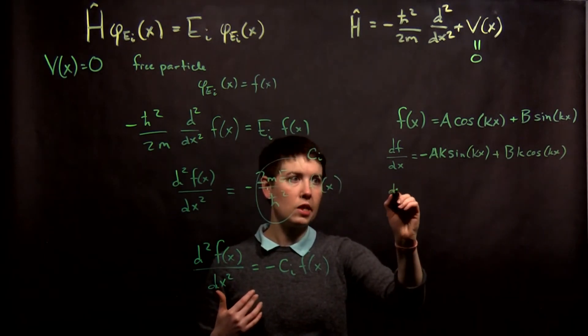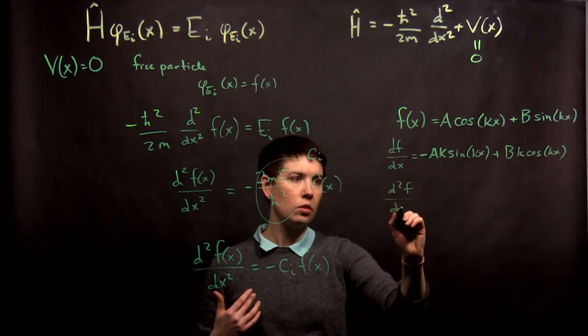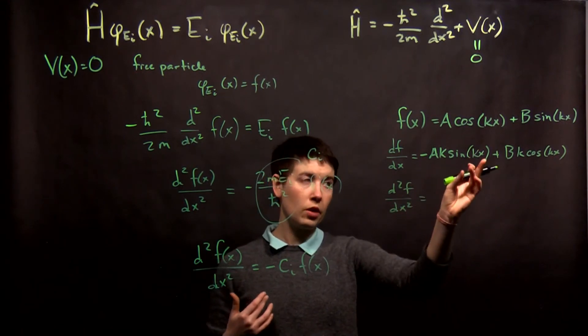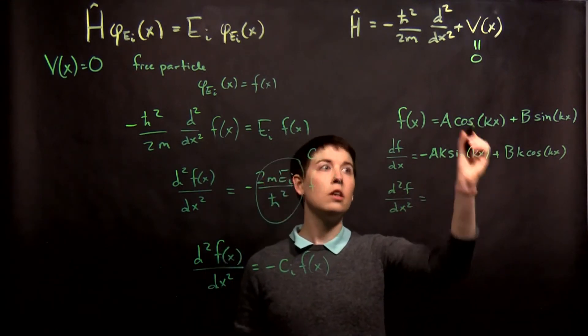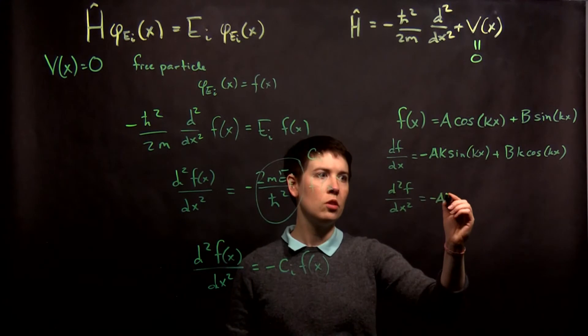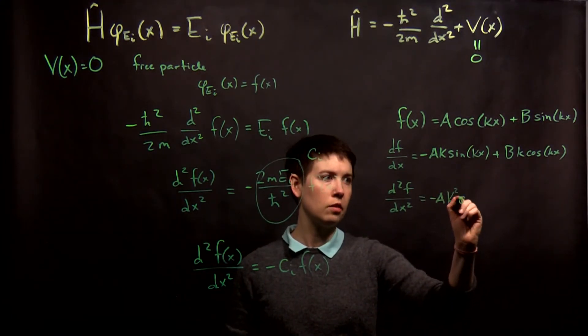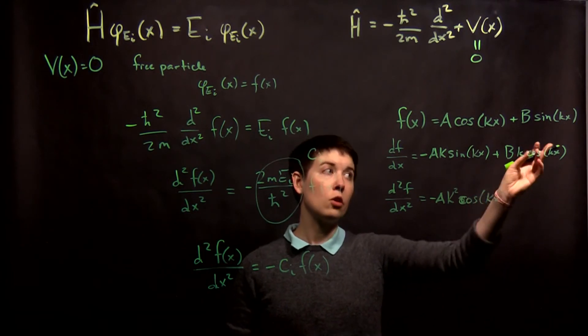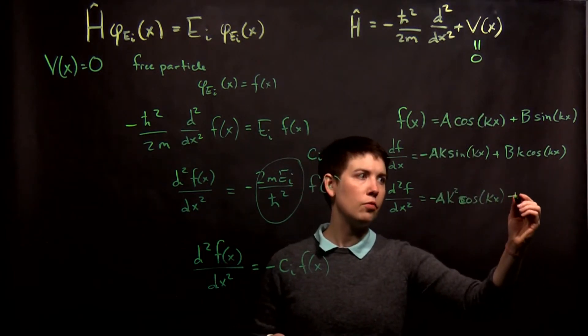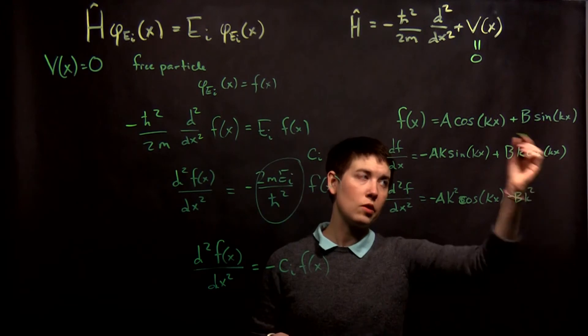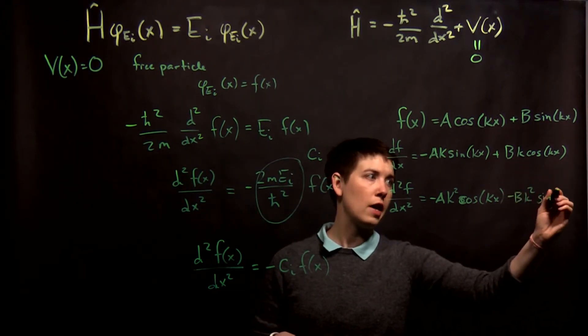Now I take this, I take my second derivative and so sine of kx will give me that cosine again. Another factor of k comes out. So negative A k squared cosine kx and then cosine becomes negative sine. So negative B k again squared, second factor comes out sine of kx.